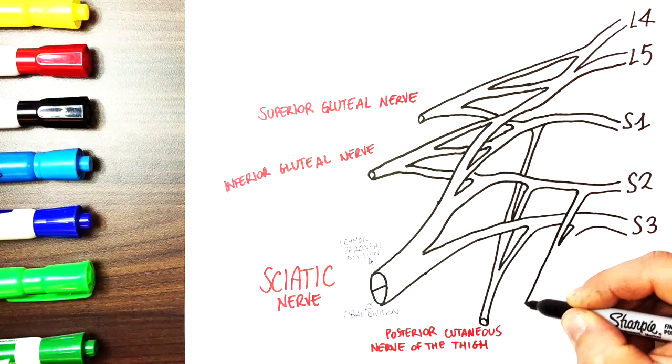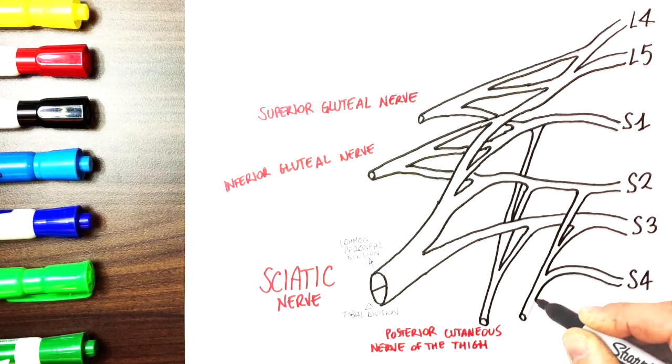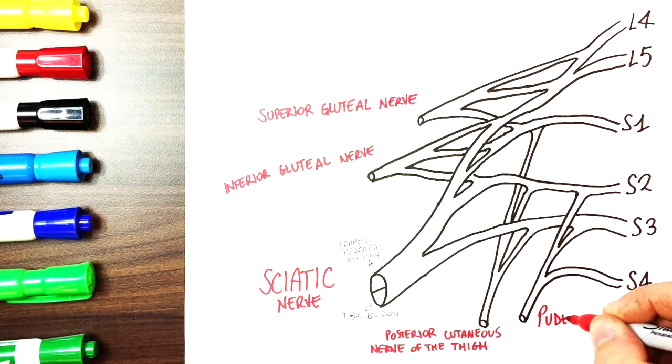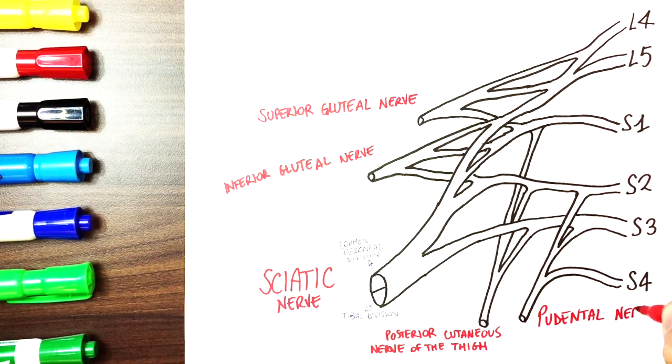From S2, S3 and S4 arises the pudendal nerve which innervates the inferior pelvis and the genitalia with both motor and sensory information.